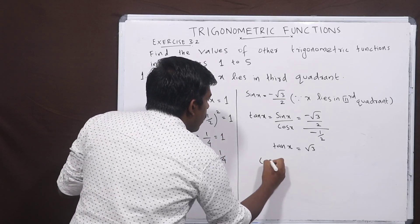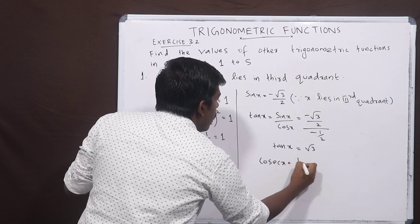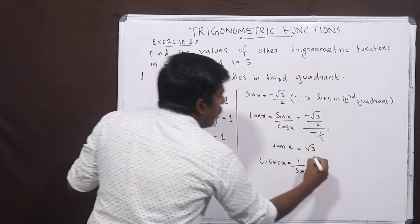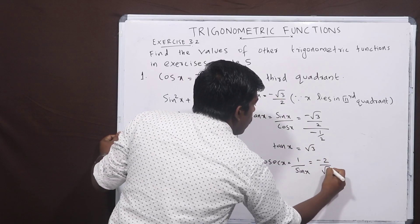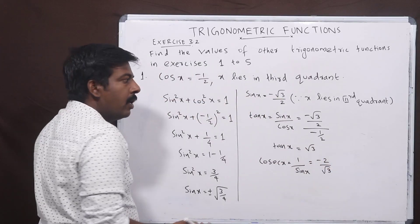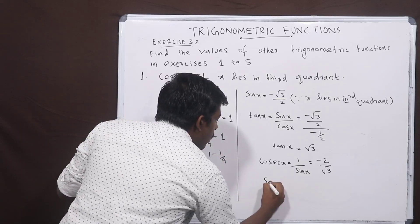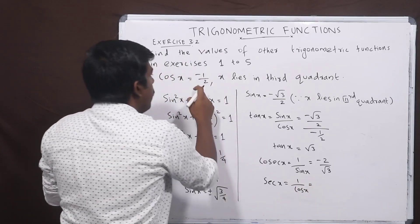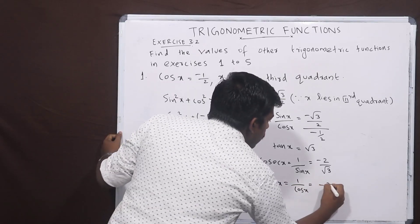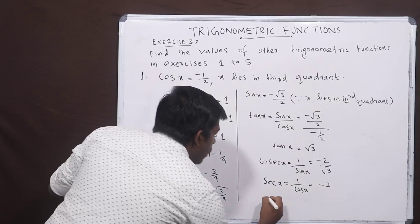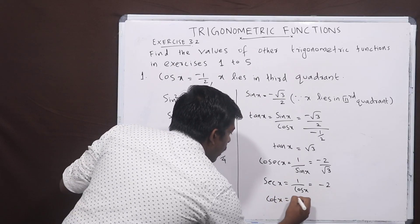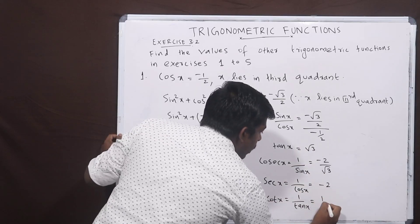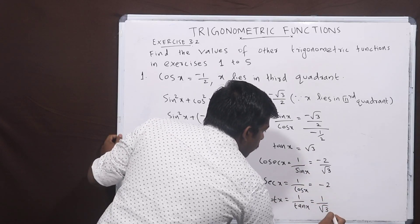The remaining functions are found using reciprocals. Cosec x is 1 by sin x, which gives 1 over negative root 3 by 2, so cosec x equals negative 2 by root 3. Sec x is 1 by cos x, which gives minus 2. Cot x is 1 by tan x, which gives 1 by root 3. This completes the first question.